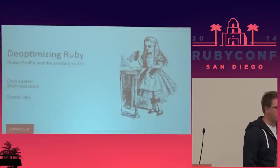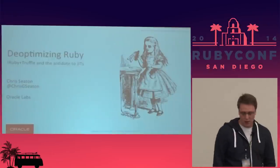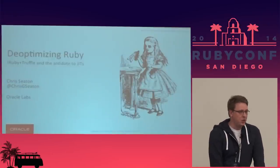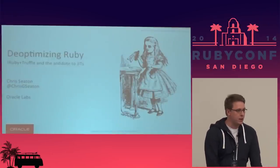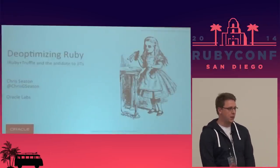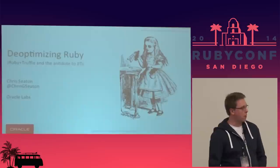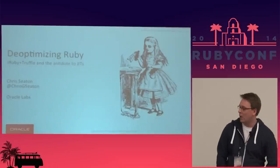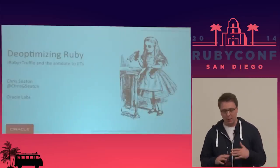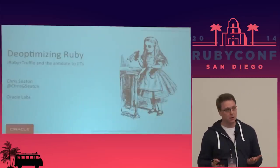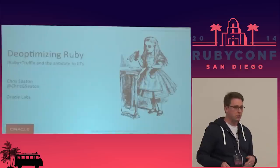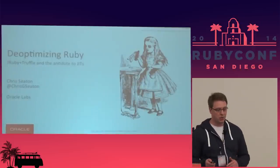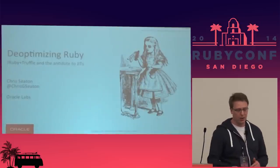Hi everyone, thanks so much for coming. My name is Chris Seeds and I'm a PhD student at the University of Manchester in the UK. I work part-time for Oracle Labs. I'm going to be talking today about de-optimizing Ruby, about how de-optimization is the antidote to JIT compilers.